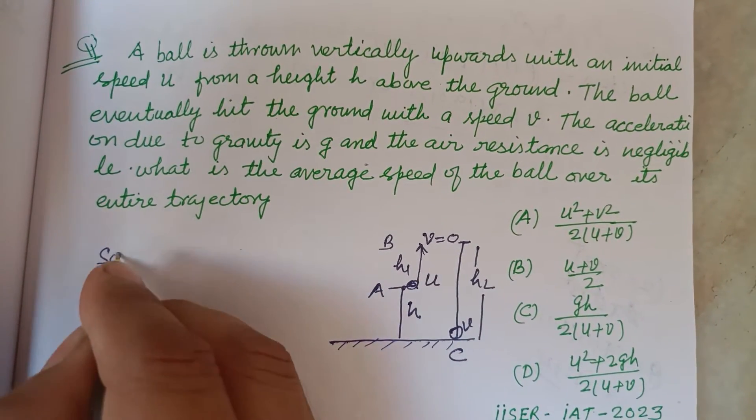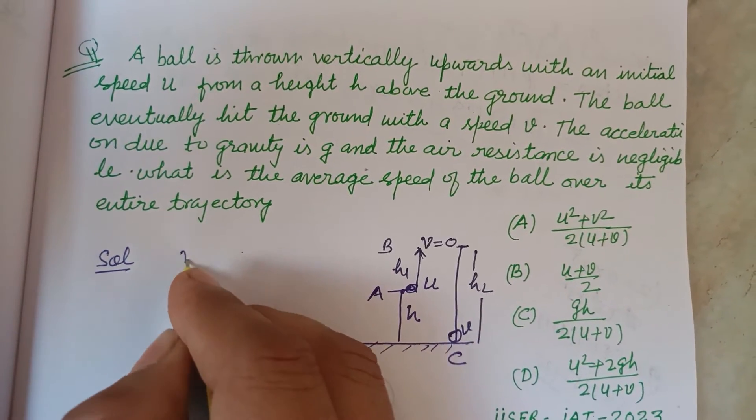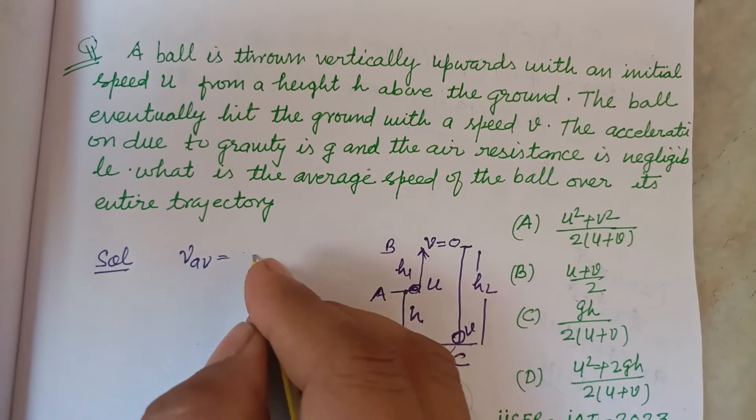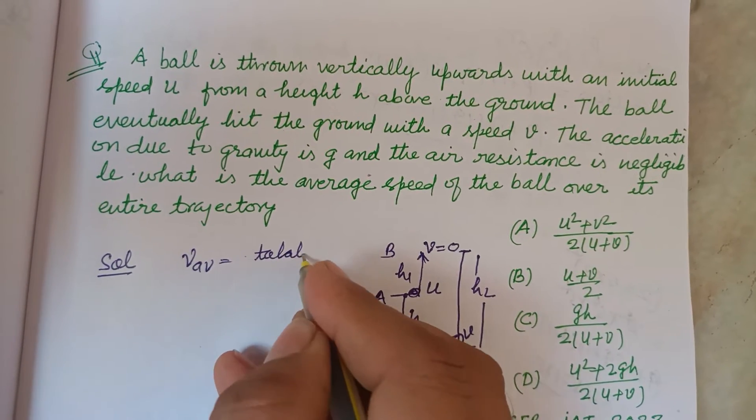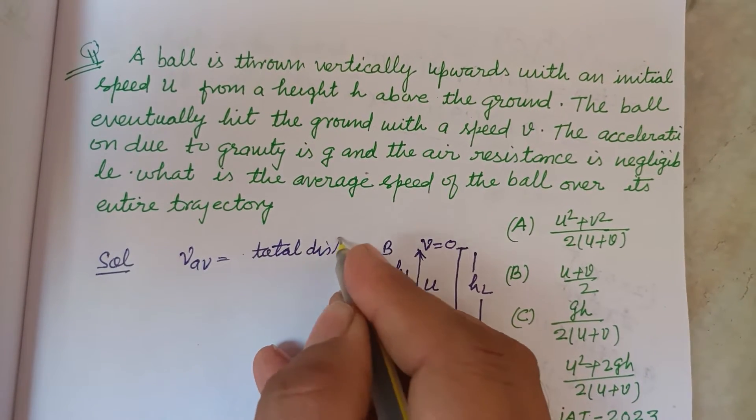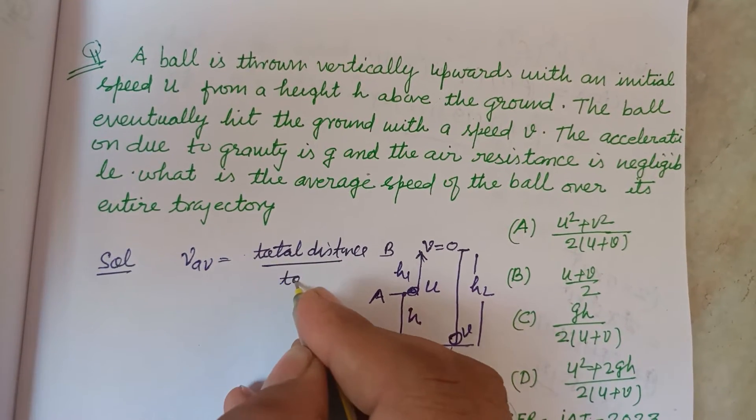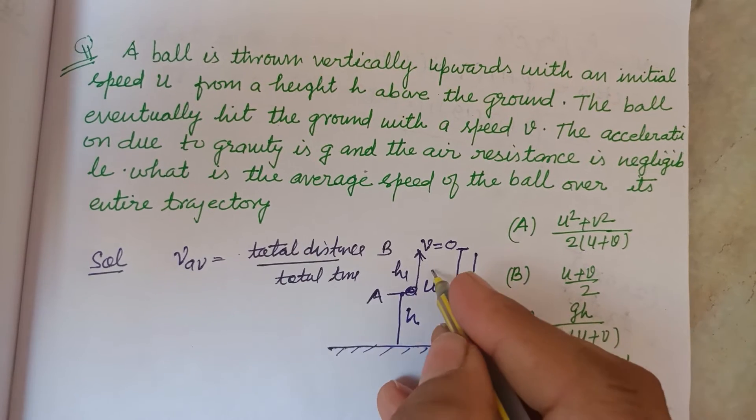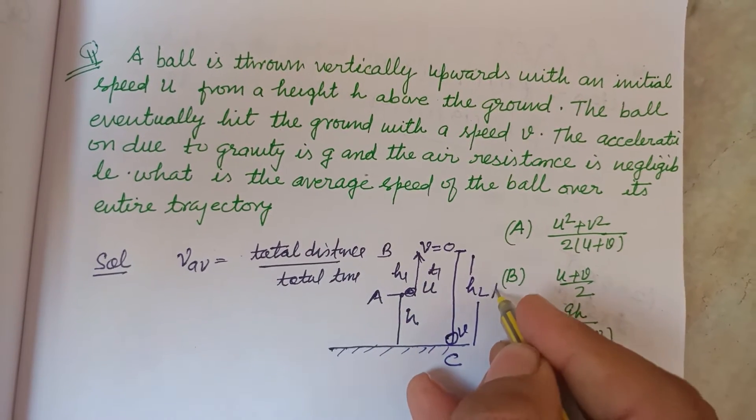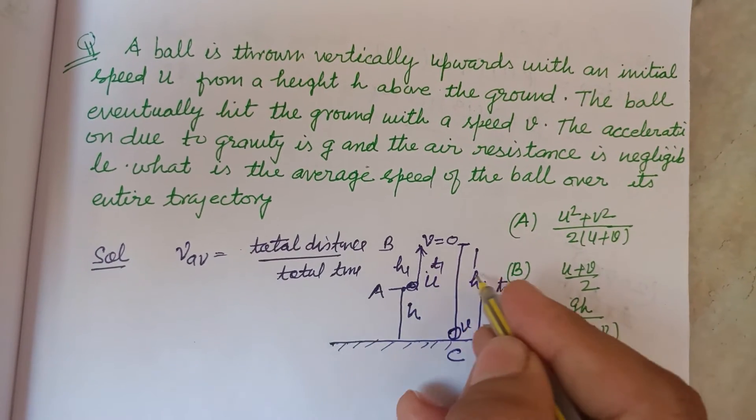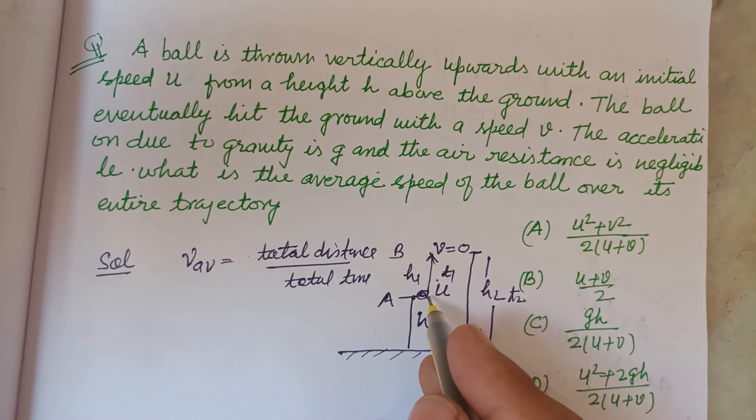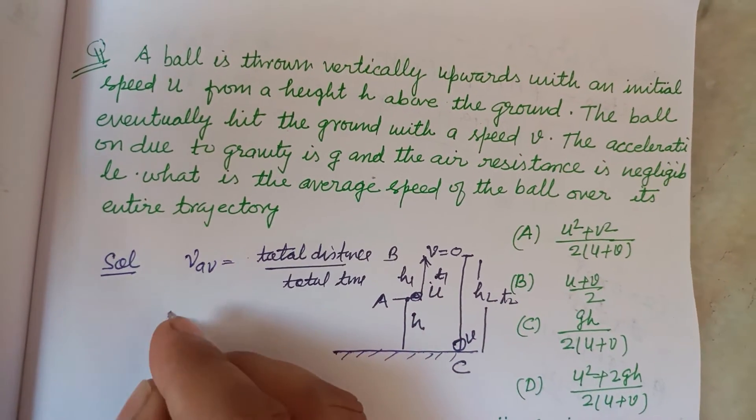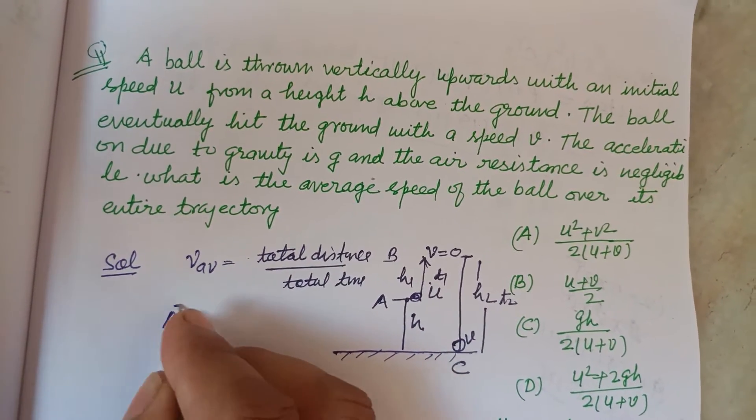So students, average speed V average is total distance over total time. You know this. So we require this time t1 and this time t2, and this height h1 and this height h2.